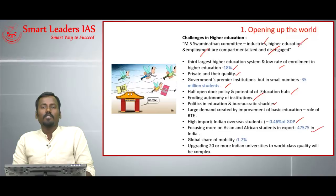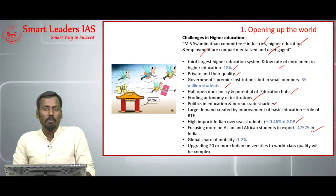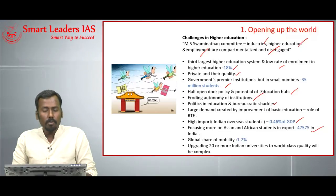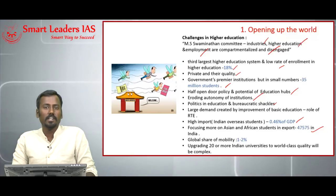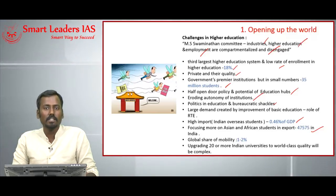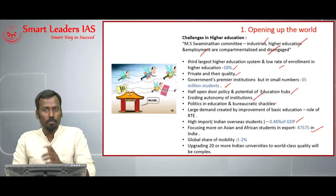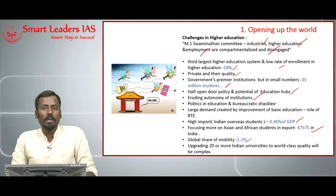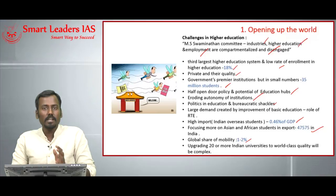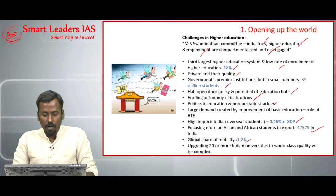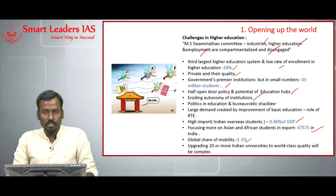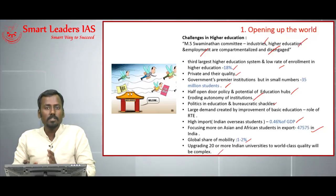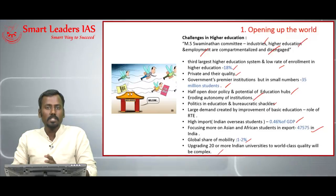With the new Study in India scheme, the number of international students is bound to increase. The global share of mobility as far as Indian educational institutions are concerned is around 1 to 2%. The government has also proposed an Institutions of Eminence scheme, planning to increase the stature and quality of 20 Indian universities, with the major objective of making these universities world-class.